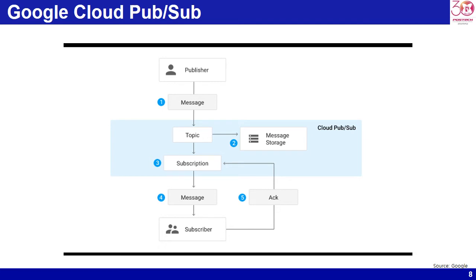Cloud PubSub is a simple, reliable, scalable foundation for stream analytics and event-driven computing systems. As part of Google Cloud's stream analytics solution, the service ingests event streams and delivers them to Cloud Dataflow for processing and BigQuery for analysis as a data warehousing solution.